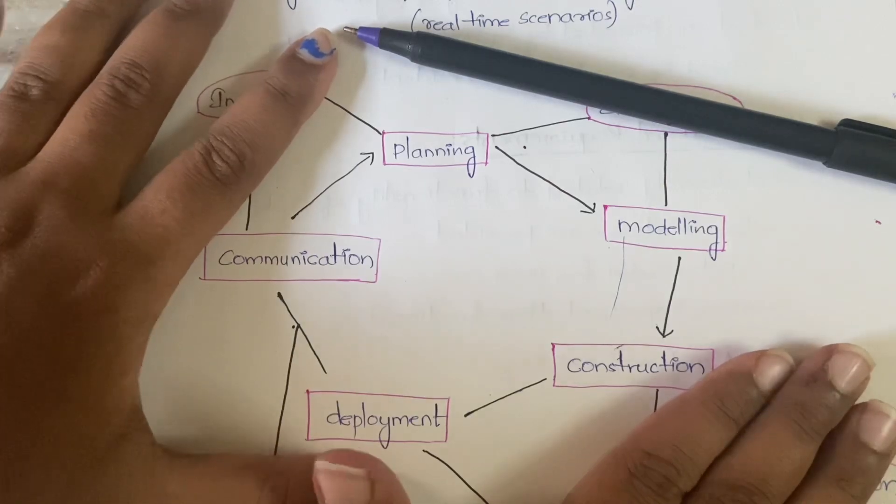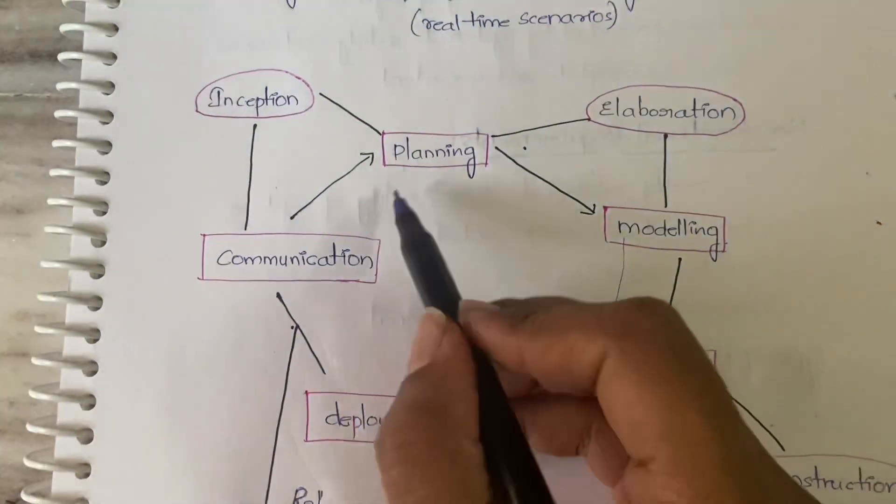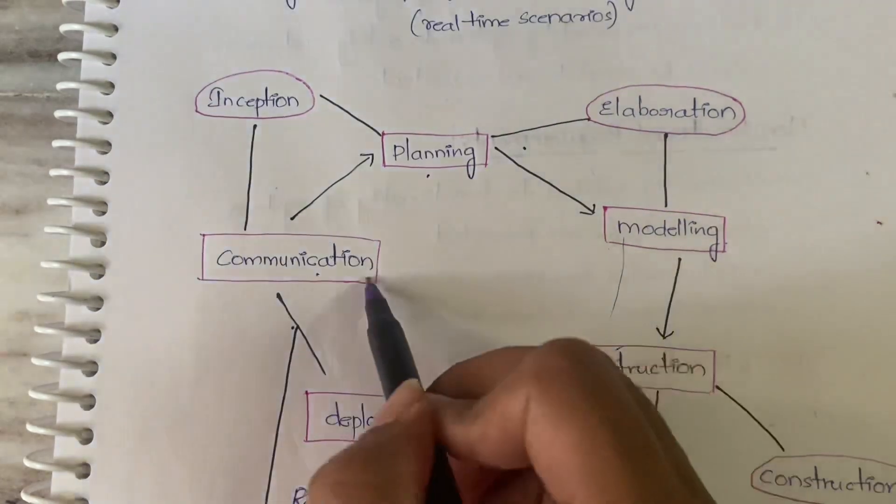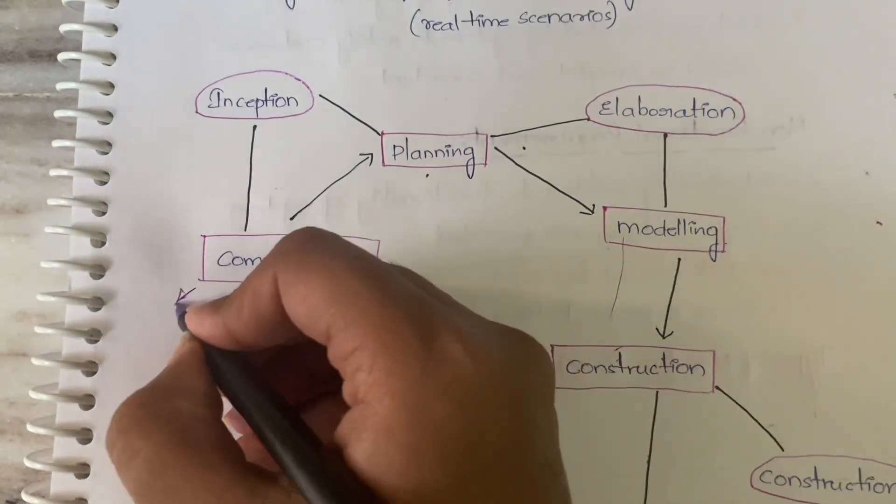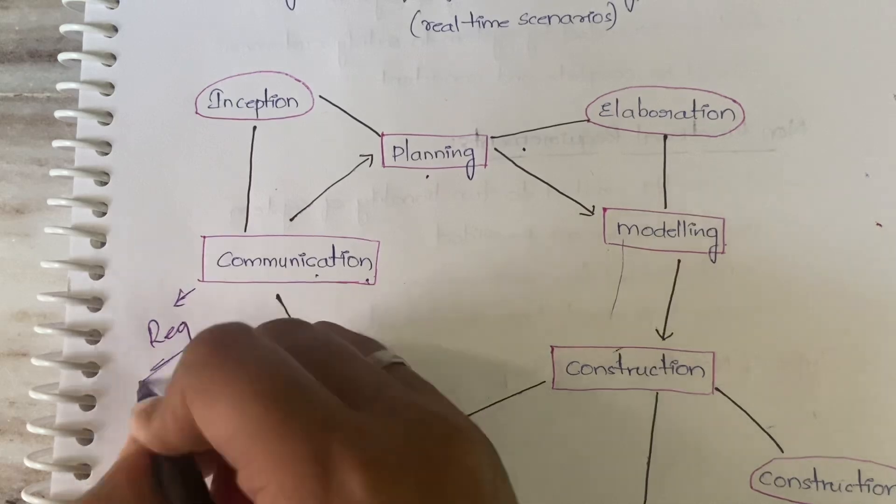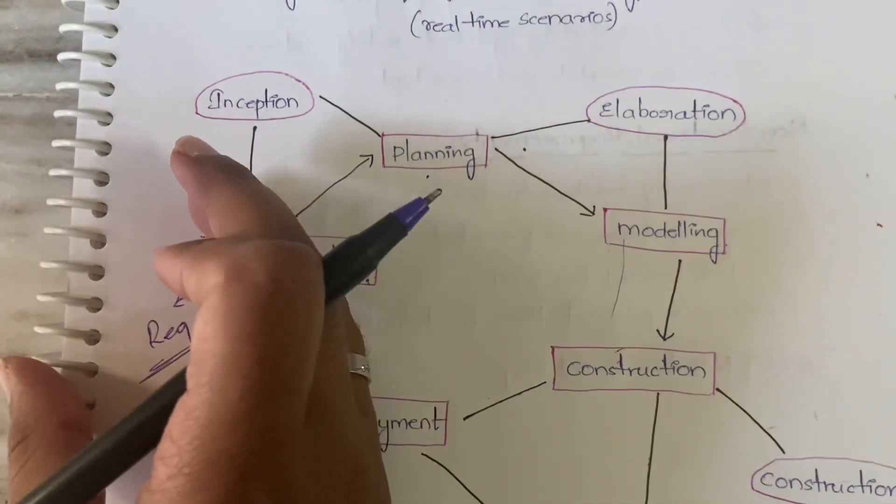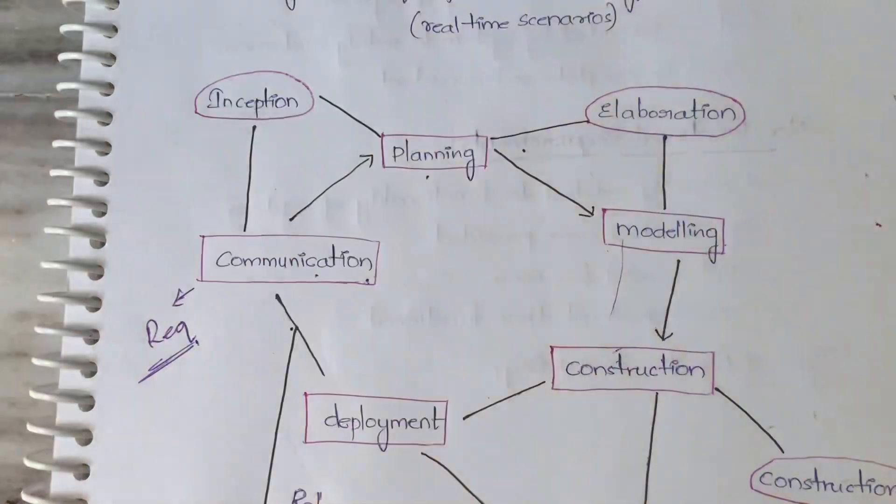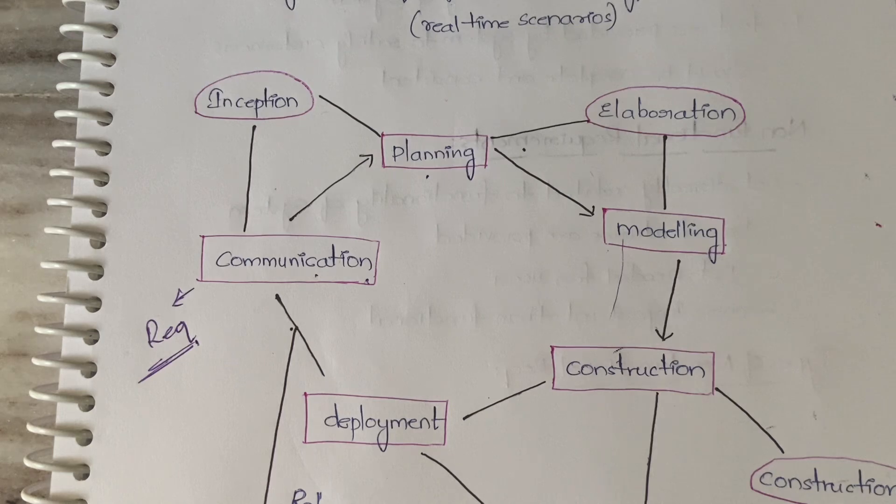It starts with communication. Communication is nothing but you are communicating with the users and gathering the requirements. Once you are done with communication, gathering the requirements and doing the analysis, you are doing the planning - like how to do the project. I have already explained all these things in SDLC and waterfall model.